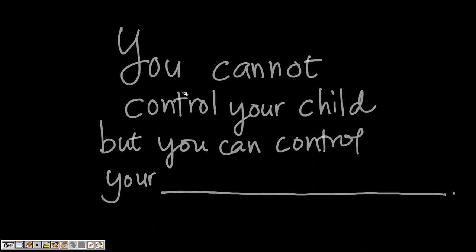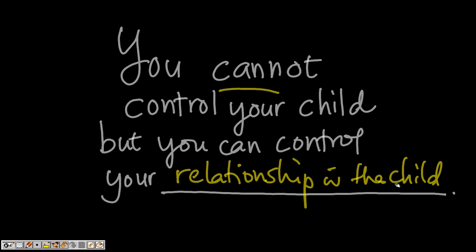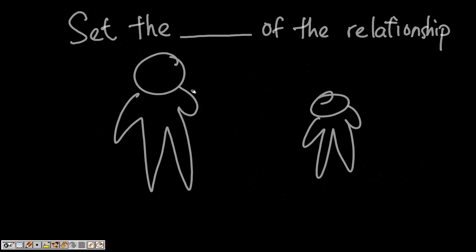Hi, this is Joseph Tan here from GoodMonday.com. You know, as parents, we hope we can control our child, but really you cannot. But there is one thing that you can control and that is your relationship with the child. You cannot control the child per se because the child has a free will, but there's a whole lot of things you can do with regards to your relationship with him or her.